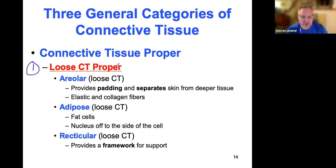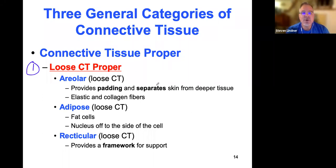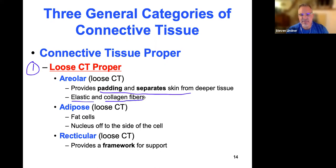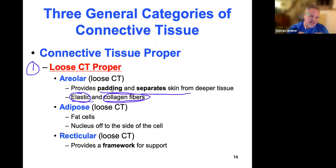Loose connective tissue provides padding for the body and separates your skin from the deeper tissues. When you pinch your forearm and your skin separates from the muscle beneath, that's areolar connective tissue. It has protein fibers: elastin and collagen. Elastin gives it elasticity and flexibility, while collagen gives it firmness and strength — collagen provides strength and stability, whereas elastin provides flexibility.